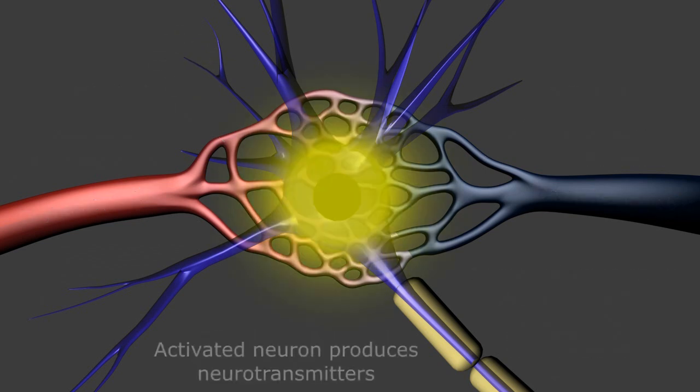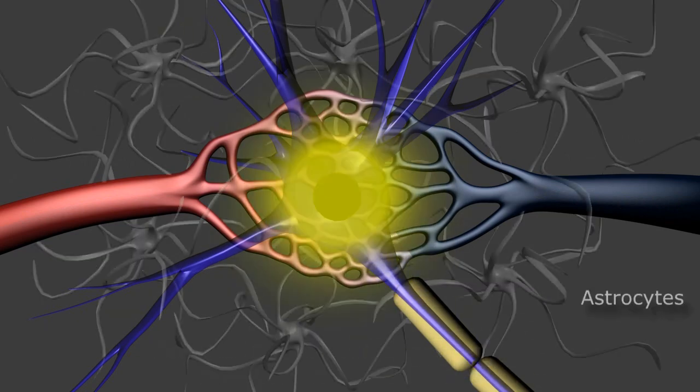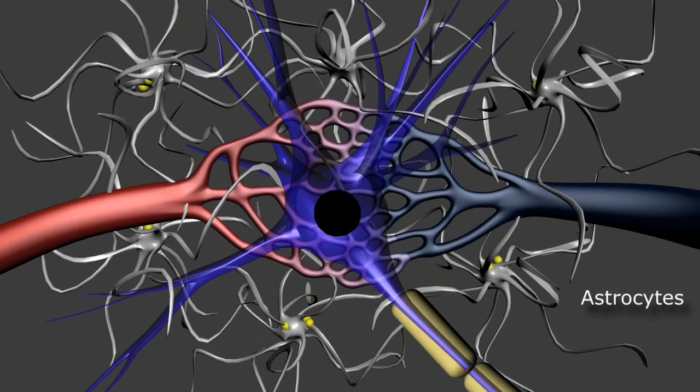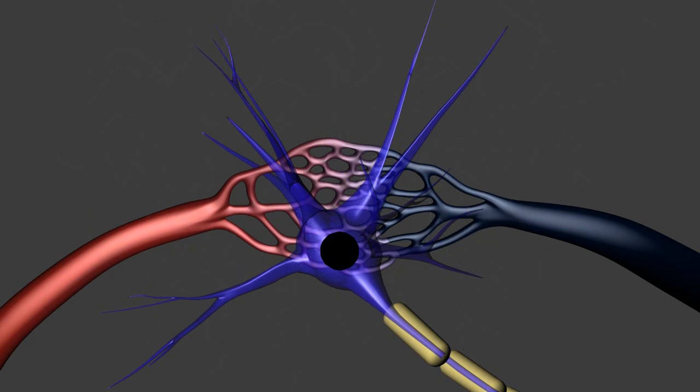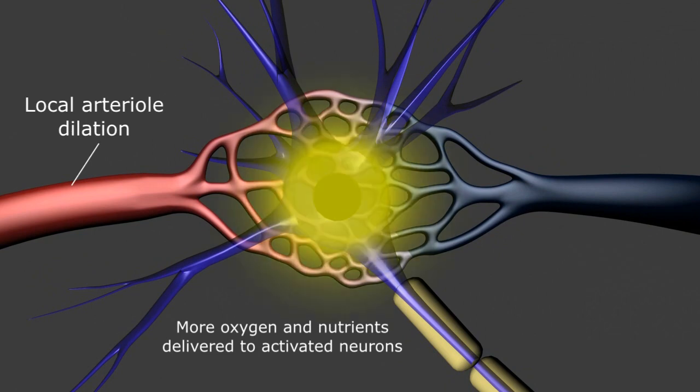the local presence of neurotransmitters induces the support cells around the neurons called astrocytes to release vasoactive chemicals onto the arterioles, causing the vessels to dilate and supply more oxygen and nutrient-rich blood to the working regional neuron.